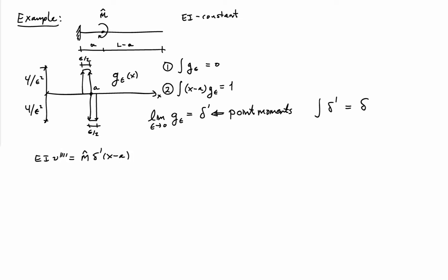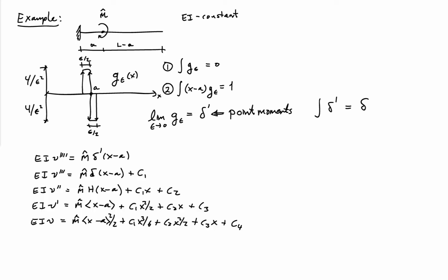We can now proceed on our problem. The equilibrium equation is EI times the fourth derivative of V equals Q. And in this case, Q, the distributed load, is given by m hat times the derivative of the delta function located at the point A. Now the procedure is the same as before. We integrate this equation four times. When we first integrate the derivative of the delta function, we get the delta function and a constant.